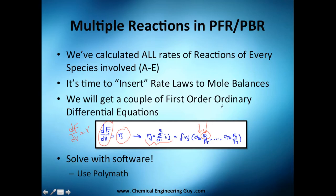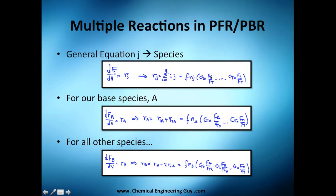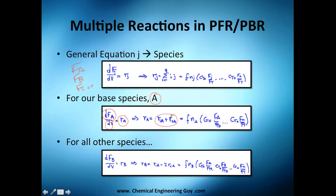We're going to get a general equation, and you'll need to substitute for each flow rate — the flow rate of A, B, C, and whatever species you have. For species A, we have the differential of the flow rate of A with respect to volume equals the rate of reaction of A. That rate of reaction of A is a function of concentration.